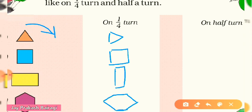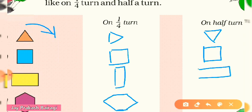Now for half turn: the triangle will look just upside down. The square will look the same. The rectangle will also look the same. And the hexagon will also look the same in half turn.